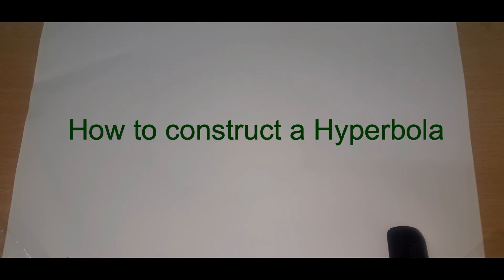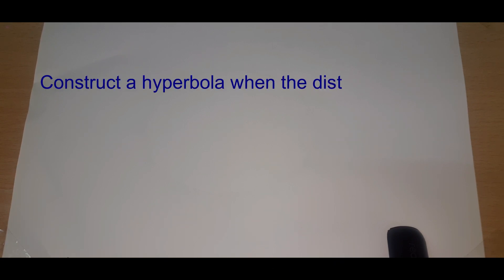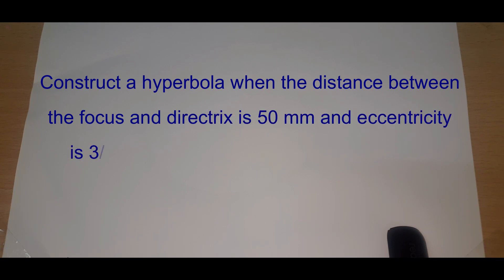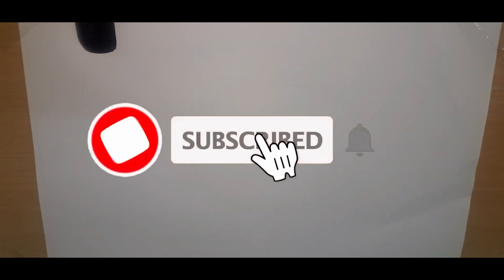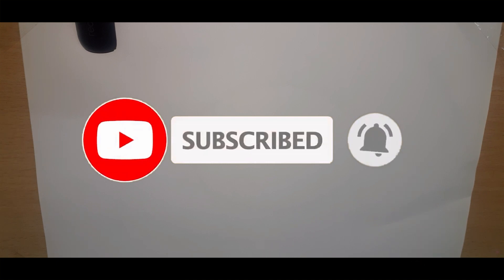In this video we can see how to construct a hyperbola. We are going to do it using the eccentricity method. The question is: construct a hyperbola when the distance between the focus and the directrix is 50 mm and the eccentricity is 3/2. Also draw the tangent and normal to any point on the curve.